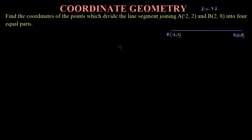Hello everyone, welcome to my channel NCRT Mathematics Learning Hub. In this video, I am going to teach you how to find the coordinates of the three points if the given line is divided into four equal parts. This is the ninth question of exercise 7.2. Find the coordinates of the points which divide the line segment joining points A and B into four equal parts.